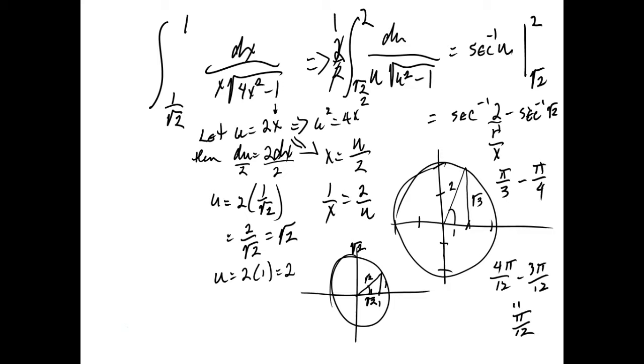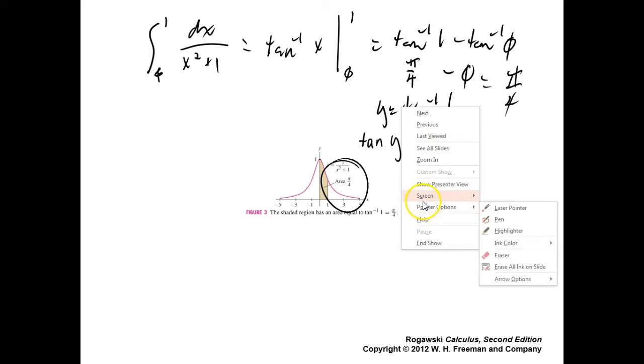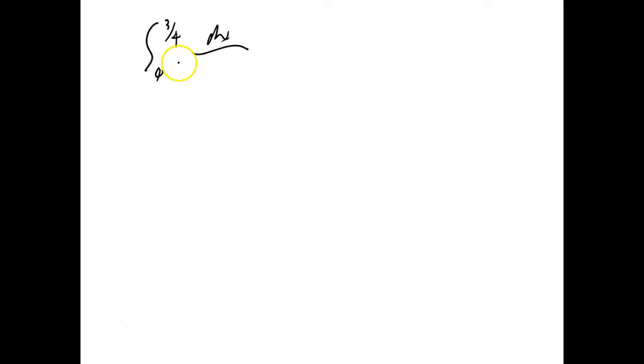Most of the difficulty here is remembering your trig. Example 3 says we're going to need substitution again. Let's see how that works. Evaluate: the integral from 0 to 3/4 of dx over the square root of 9 minus 16x squared.